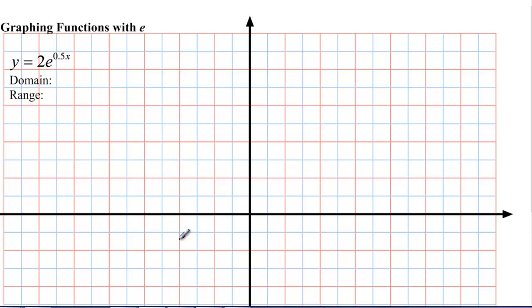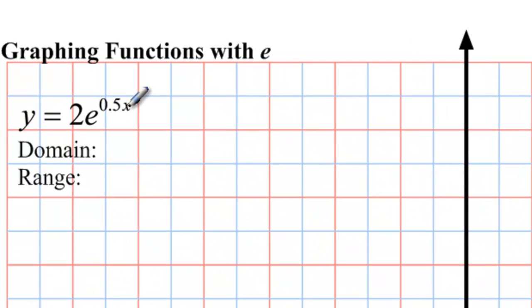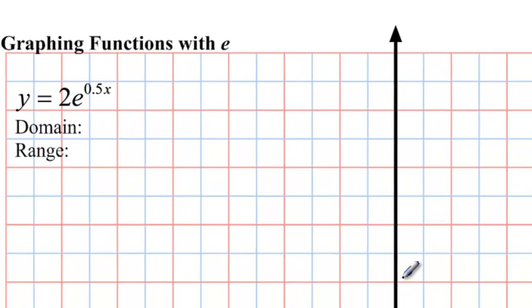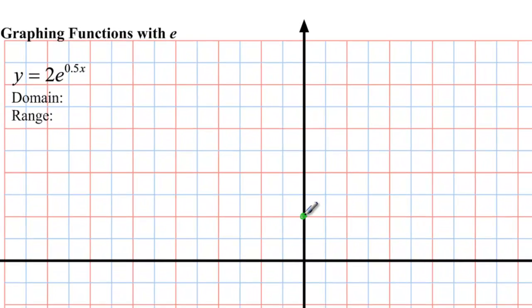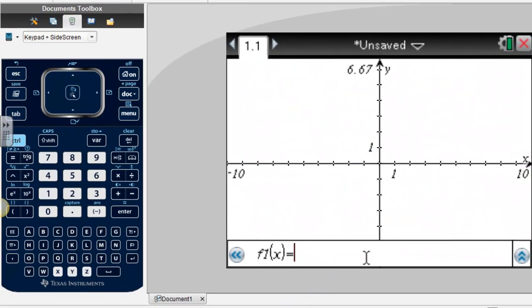Now how are we going to graph these? Well, we're going to graph them with our calculator. Because even if I wanted to plug in values here, this is not going to be very nice. We really only have one nice number here. And that's when x is 0. If I plug in x as 0, I get .5 times 0, which is 0. e to the 0 is 1, because anything to the 0 is 1. And 1 times 2 is 2. And so I know that 0, 2 is on my graph. What I don't know is what other points are on my graph. So I'm going to click over here to the calculator.